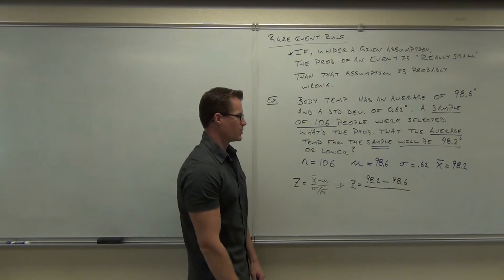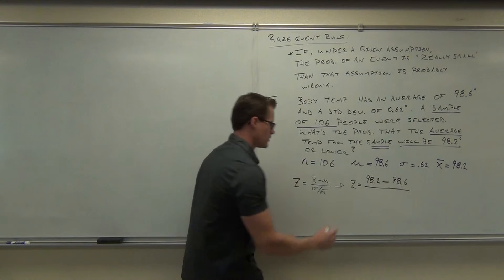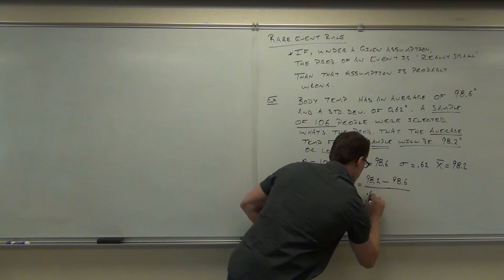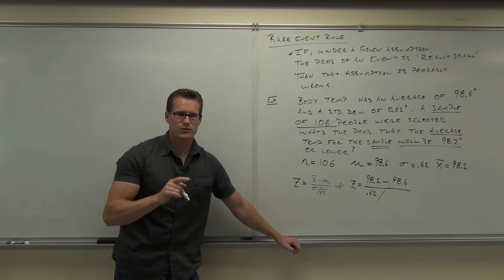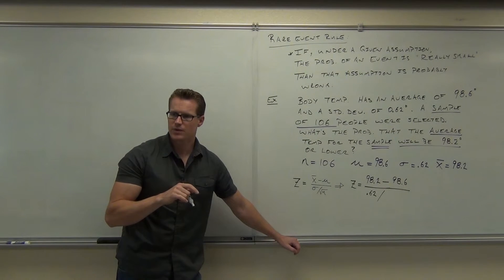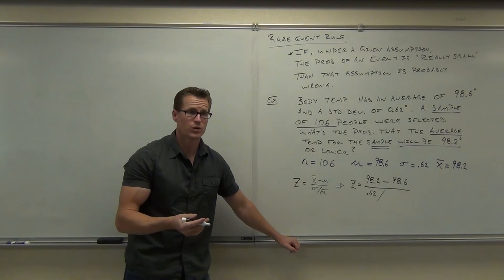Okay. Over. What's the next thing I put? 0.62. Divided by what now? Square root of 106. The square root of, not just 106, right? That'd be way off. But the square root of 106.